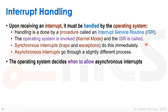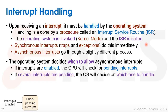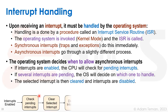Asynchronous interrupts are handled differently. If someone clicked the mouse, I may not want to handle it immediately. The operating system must decide when to allow asynchronous interrupts — if I'm in the middle of something important, I can disable them. Interrupt enabling is important: I can either enable or disable asynchronous interrupts. When enabled, the CPU periodically checks for any pending interrupts from devices. If several interrupts are pending at once, the OS must decide which one to handle. It selects one and clears it.